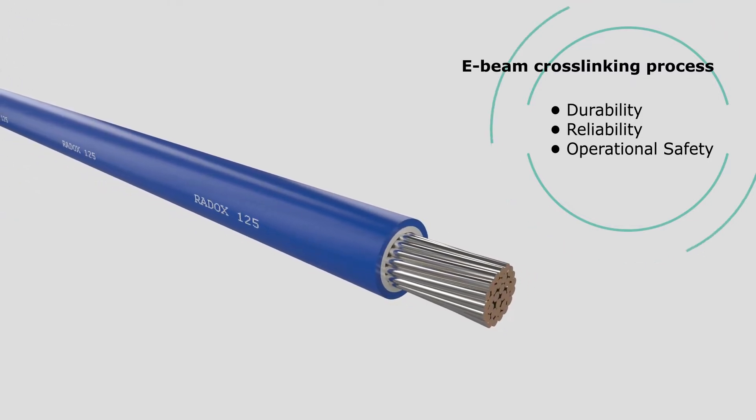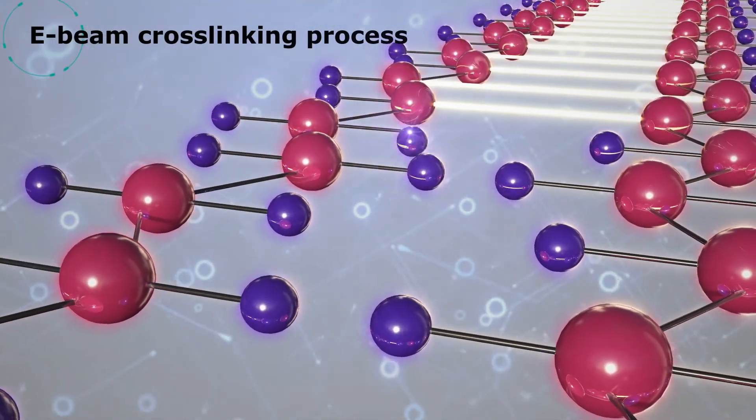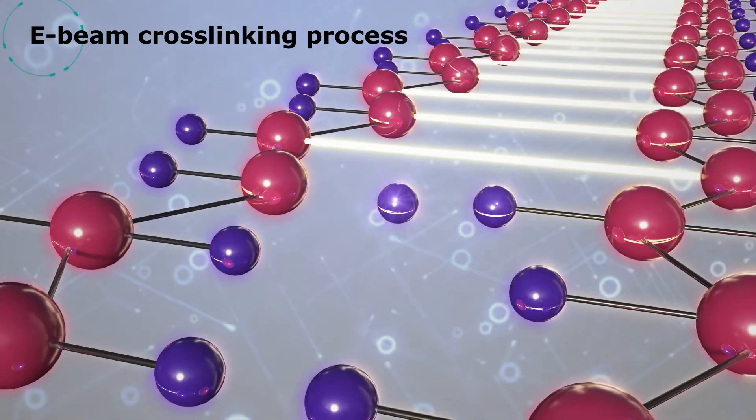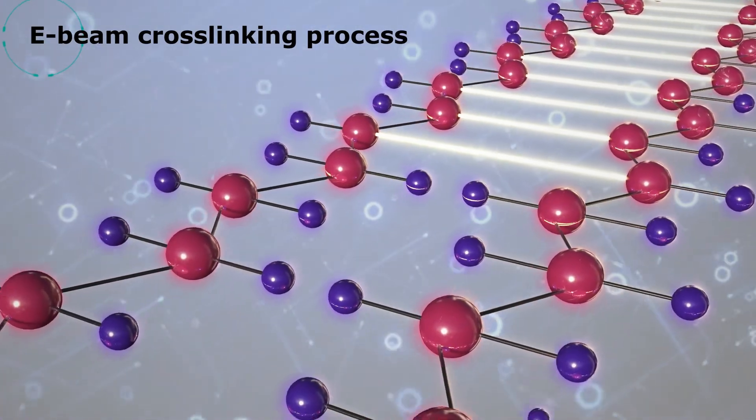In this process, energy from the electrons or chemical reactions creates active sites along the polymer chains which bond and link together, thus preventing the polymer from melting or flowing.